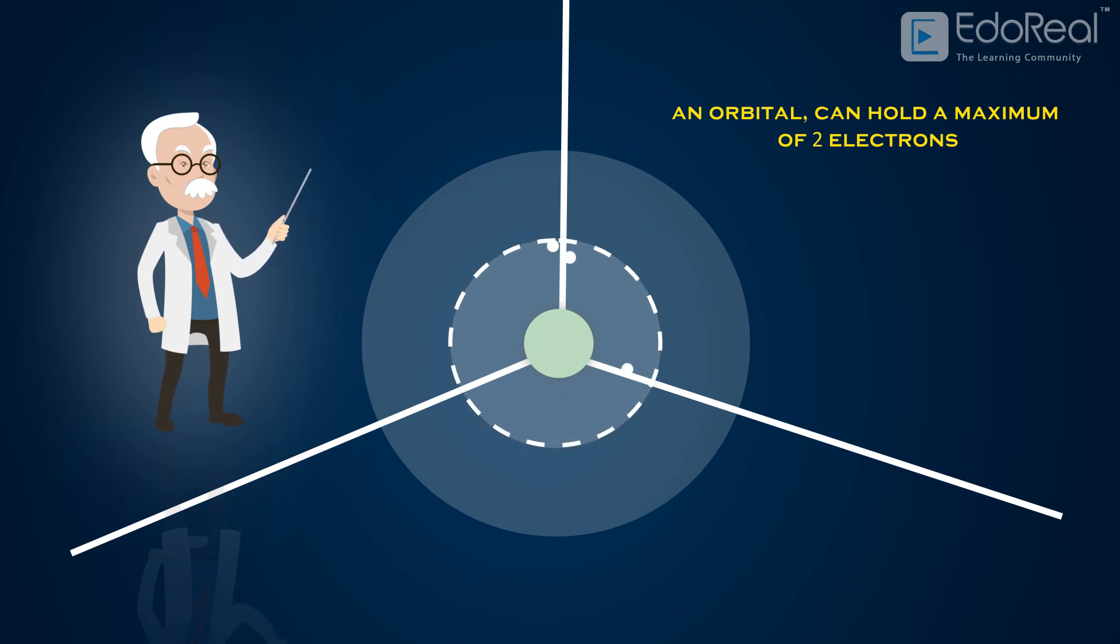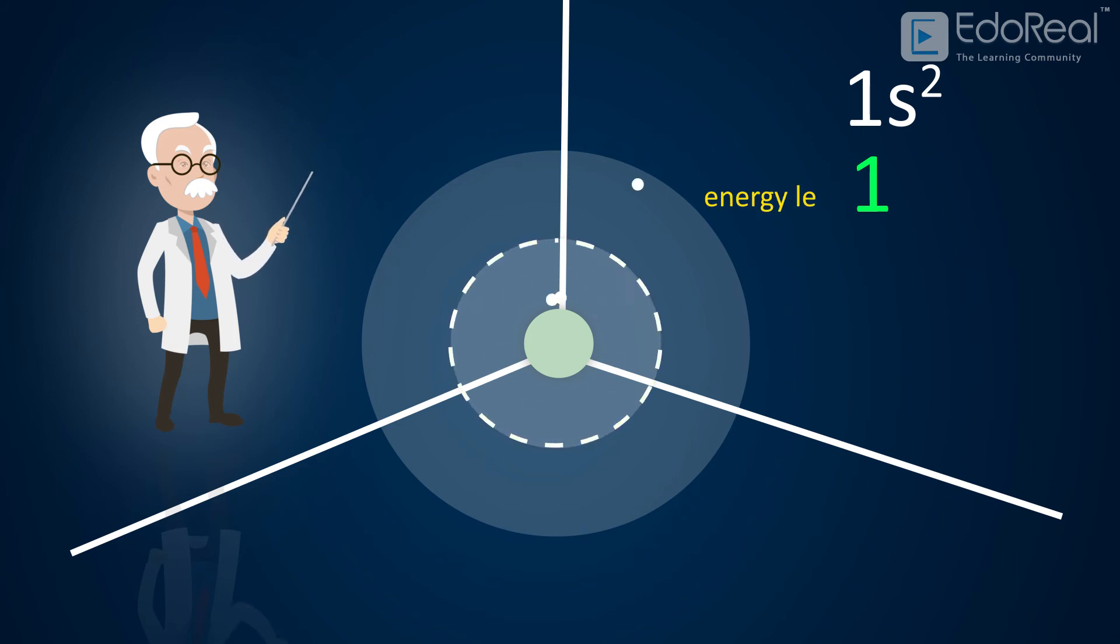As the first two electrons are found in a single spherical space nearest to the nucleus, this orbital is represented as 1s2, where 1 indicates the energy level, and 2 represents the two electrons found in this orbital.